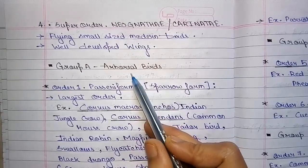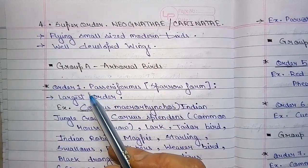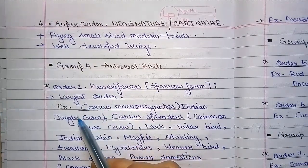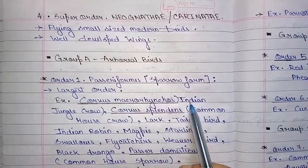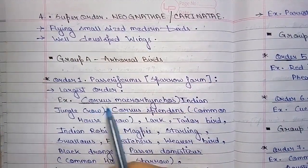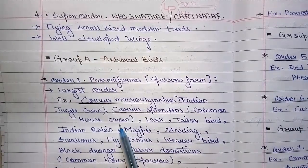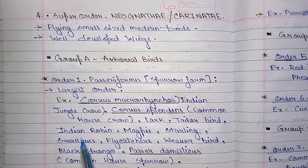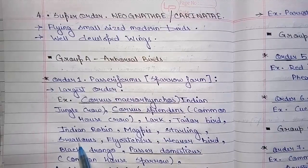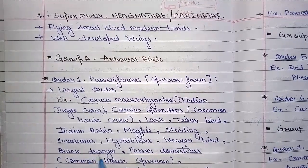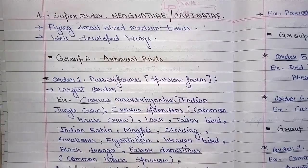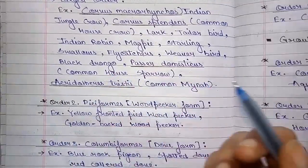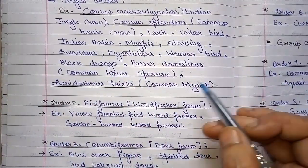Group A consists of arboreal birds. The first order is Passeriformes. It is the largest order. Examples include Indian Jungle Crow (scientific name: Corvus macrorhynchos), Common House Crow (Corvus splendens), Lark, Tailor Bird, Indian Robin, Magpie, Starling, Swallows, Flycatchers, Weaver Bird, Black Drongo, and Common House Sparrow (Passer domesticus).